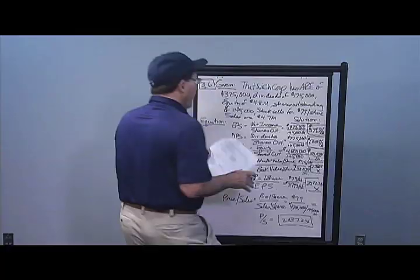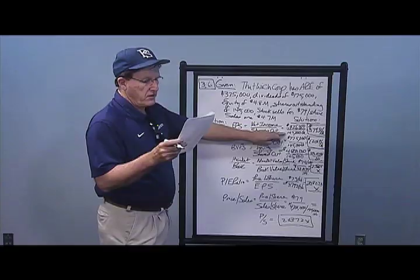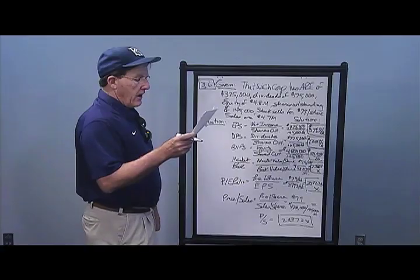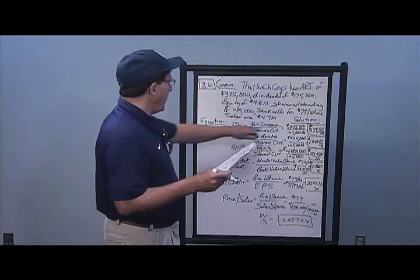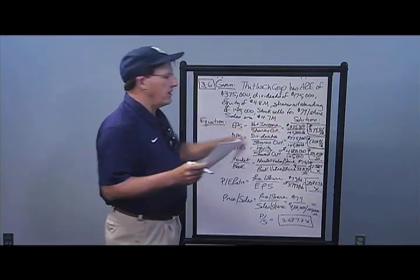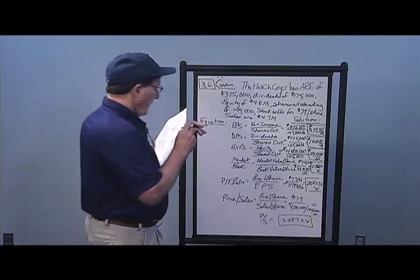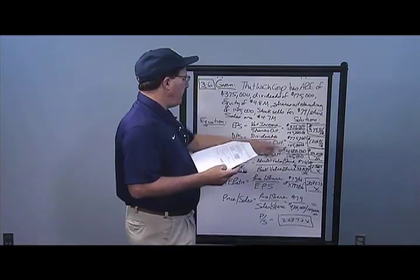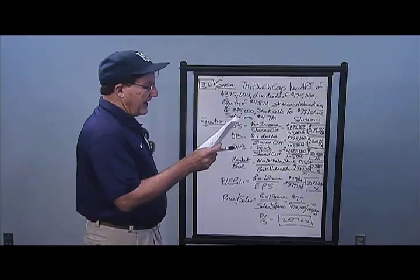Taking $375,000 plus $175,000 in the numerator divided by 145,000 shares, I get $3.7931 per share for EPS. For dividends per share, I take dividends divided by shares outstanding: $175,000 divided by 145,000 shares gives $1.2069 per share.